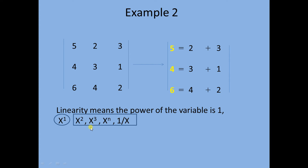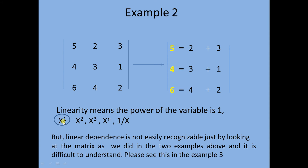All other variables — such as x raised to the power 2, x raised to the power 3, x raised to the power n, or x as a denominator — are not linear, and their combination will also not be called a linear combination. Linear dependence is not easily recognizable just by looking at the matrix, as we did in the two examples above, and it is also difficult to understand.